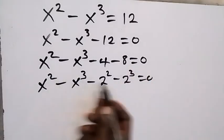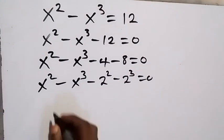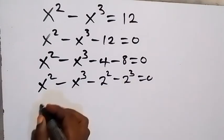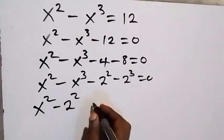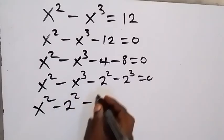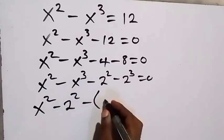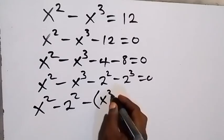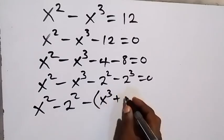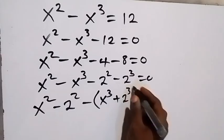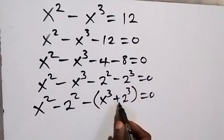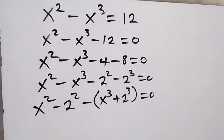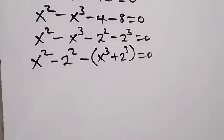From here, let's group the powers of 2 together and the powers of 3 together. We have x squared minus 2 squared, then we take out a minus and get minus bracket x cubed plus 2 cubed, equals to zero — because of this minus sign, the sign flips.